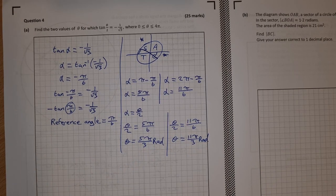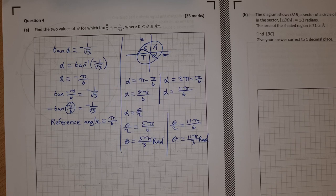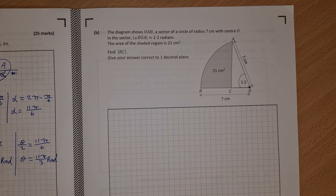So those are our two values for theta, for which tan of theta over 2 is equal to minus 1 over root 3. And on to part B then.